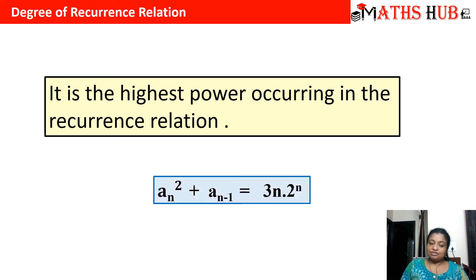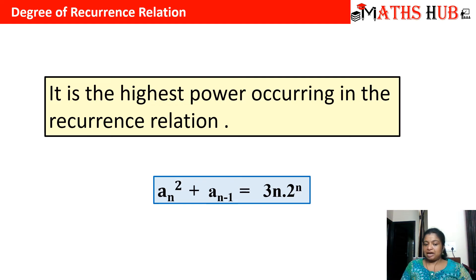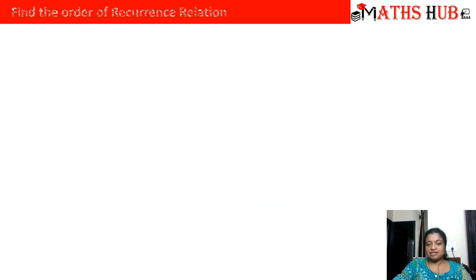For the recurrence relation an² + an-1 = 3n · 2^n, the highest power of any sequence term is 2. So the degree of this recurrence relation is 2. Let us try more examples. For calculating the order of the next relation, to calculate ar you just require ar-1, so the order equals 1.